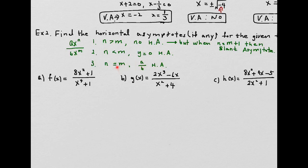There is one exception. When the numerator degree is greater than the denominator degree by exactly one — so the numerator is just one degree higher than the denominator — then you're going to end up getting a slant asymptote. We'll go over this and I'll show you how to find the slant asymptote whenever we encounter that case where there's just one degree difference between numerator and denominator.